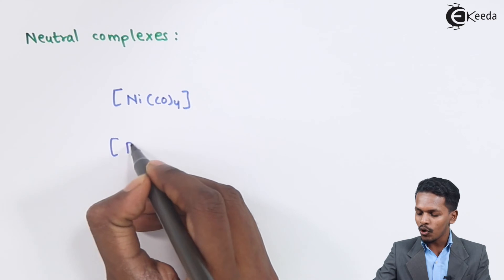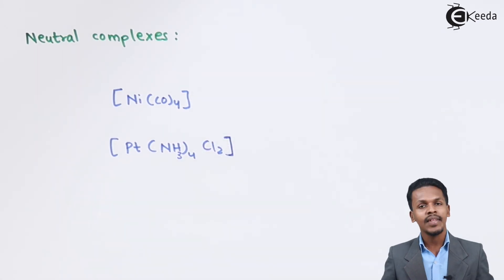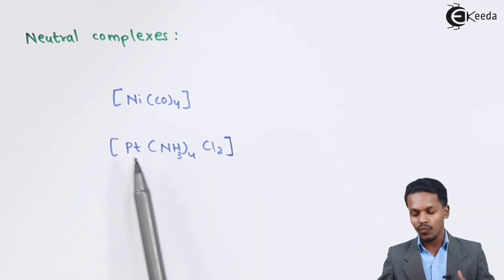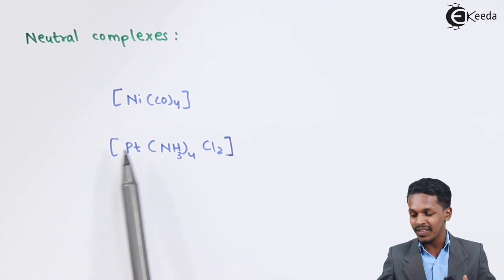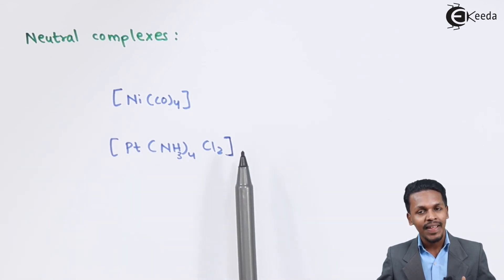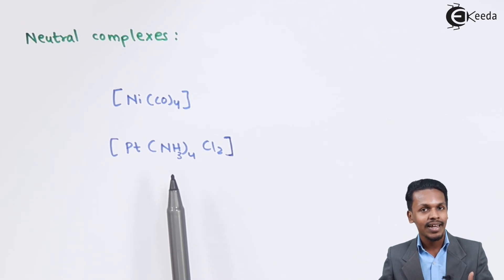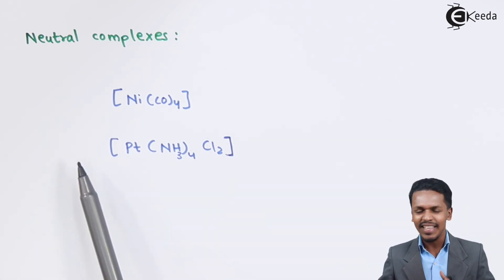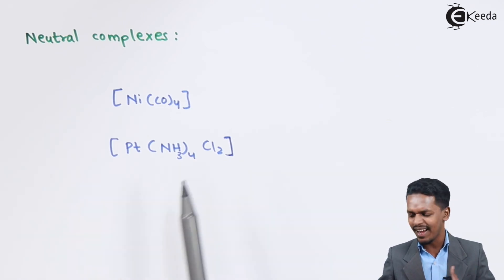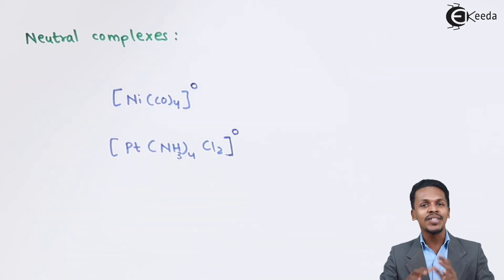Another example of a neutral complex is a platinum complex where ammonia and chlorine atoms are both associated with platinum in the secondary sphere. Since there is no primary entity, even if dissolved in a solvent it will not ionize. With no atoms in the primary entity, the complex acquires zero charge and is therefore called a neutral complex.